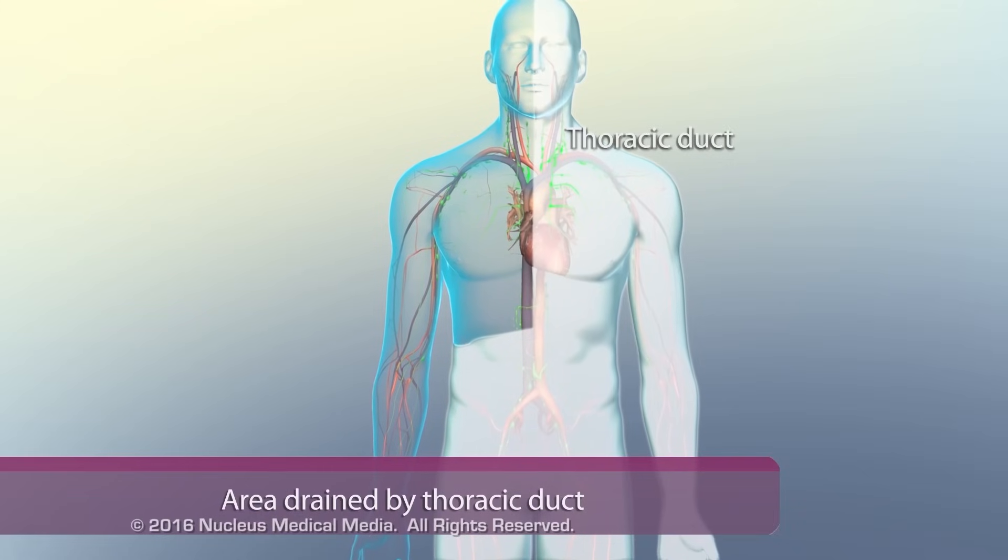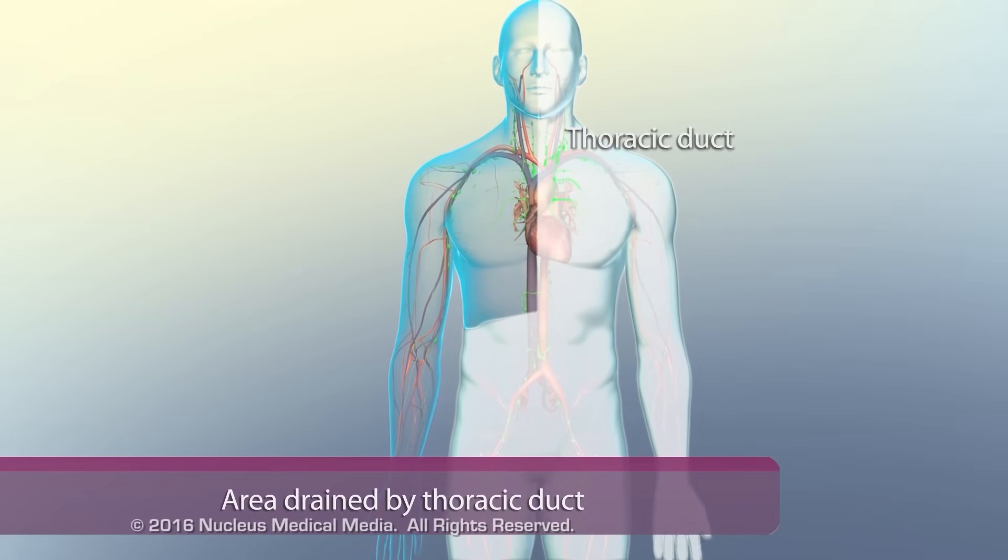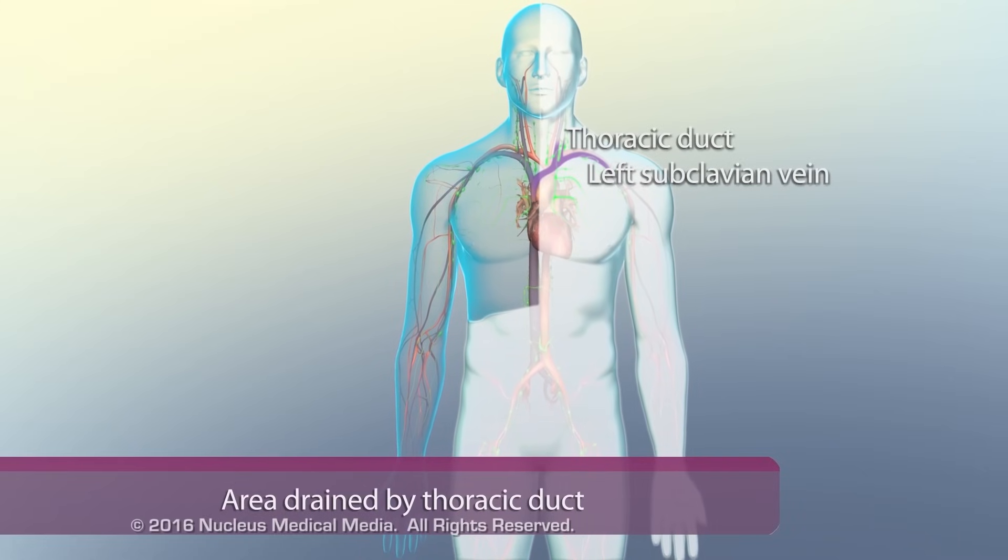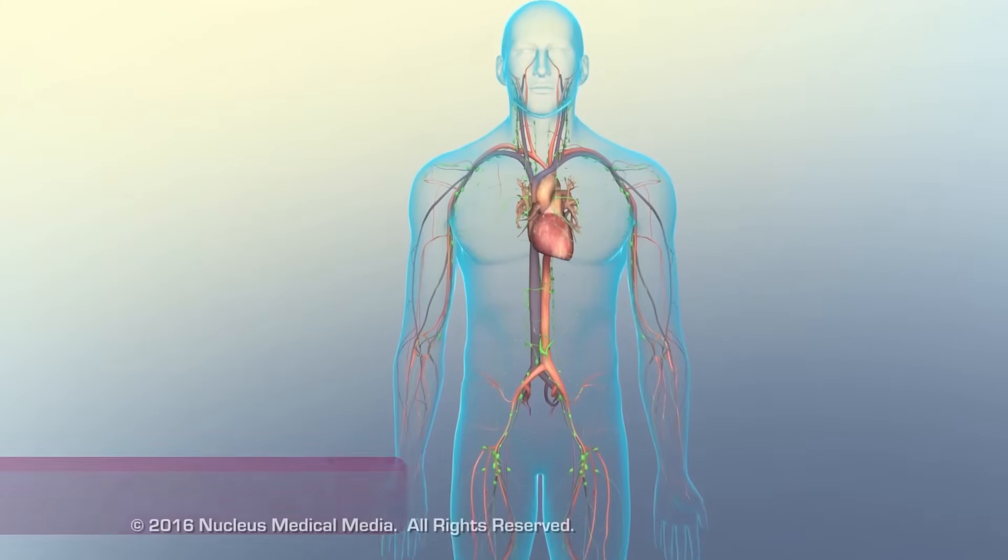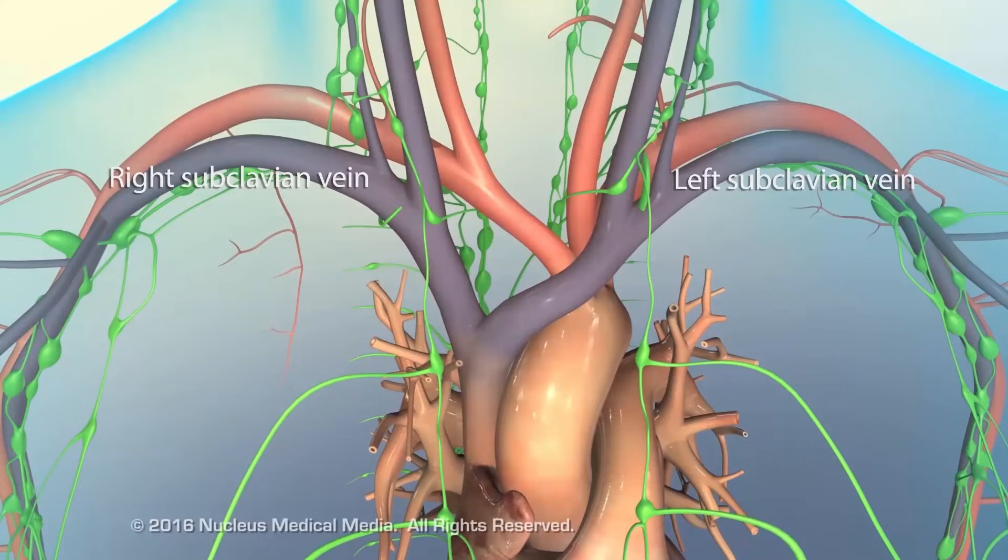The thoracic duct delivers lymph from the rest of the body to the left subclavian vein. After passing into the subclavian veins, lymph returns to the bloodstream.